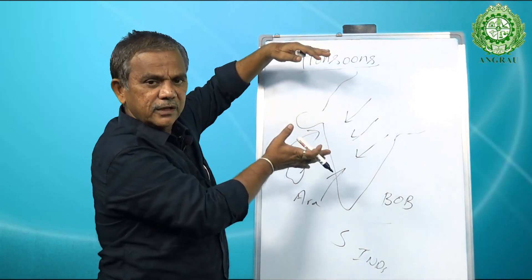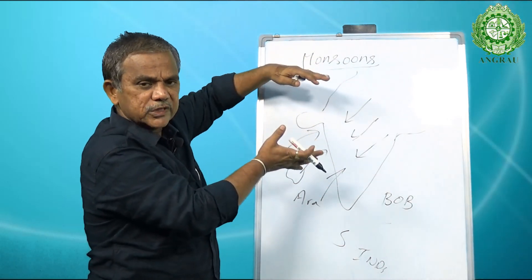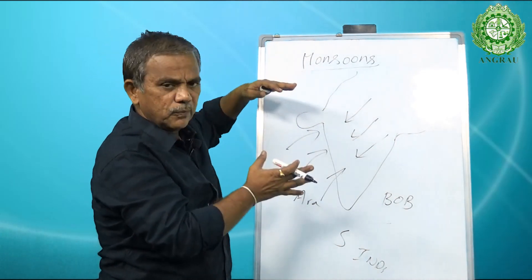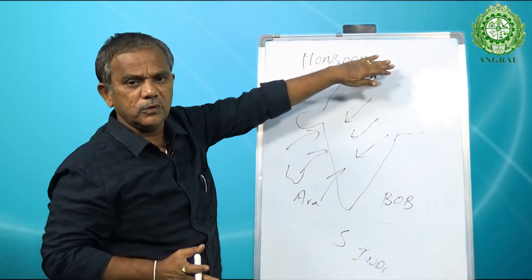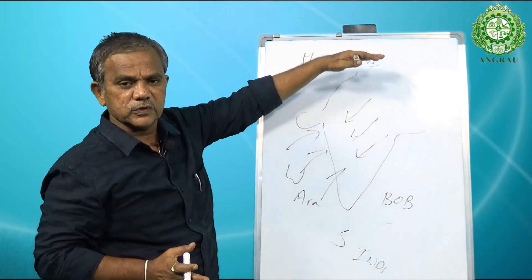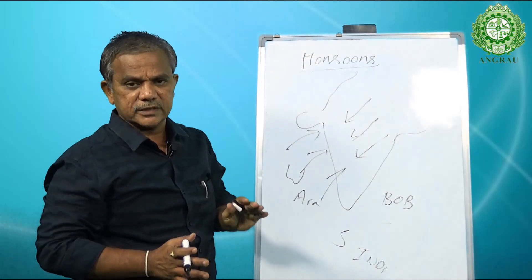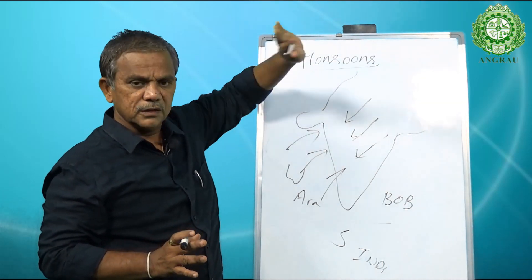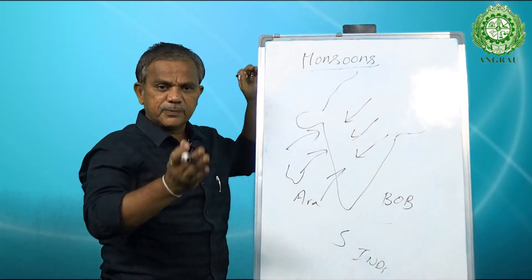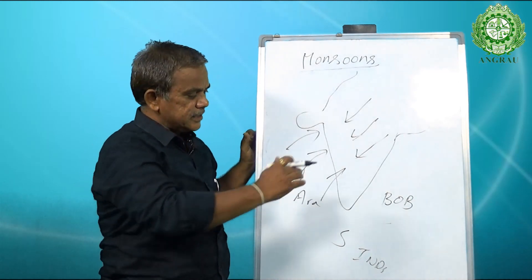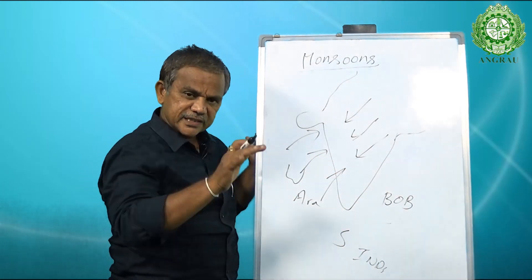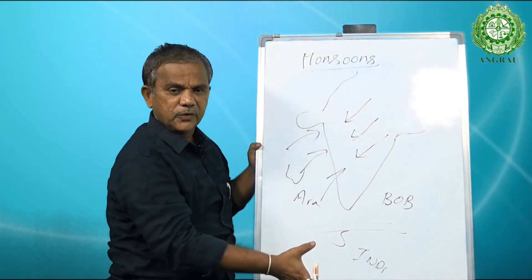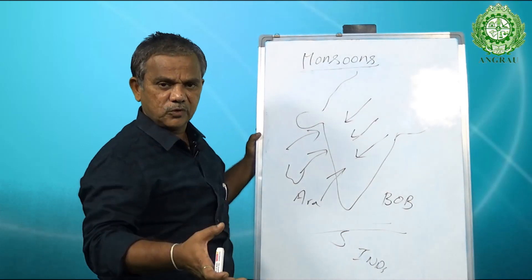The entire landmass gets heated from around May 21st onward to September 21st. However, the maximum heat is received up to June 21st, which is the summer solstice when the northern hemisphere receives the maximum solar radiation. After September 21st, the earth is inclined so that the southern part of the globe gets heated up.